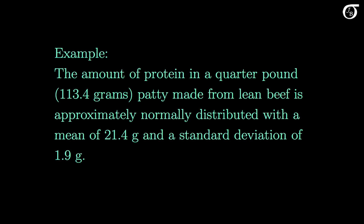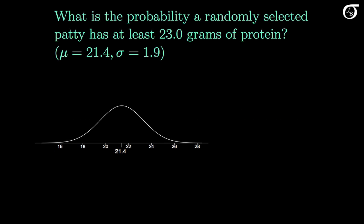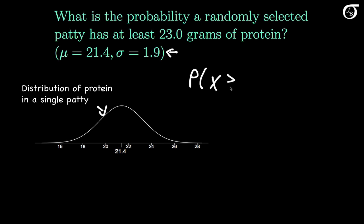Let's look at an example. The amount of protein in a quarter pound patty — about 113 grams of lean beef — is approximately normally distributed with a mean of 21.4 grams and a standard deviation of 1.9 grams, based on the USDA nutrient database. Suppose we want to know the probability a single randomly selected patty has at least 23.0 grams of protein. If we let X represent the amount of protein in a randomly selected burger, we want the probability that X is at least 23.0 — the area to the right of 23.0 under the distribution.